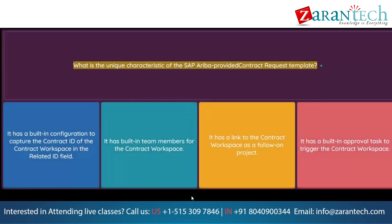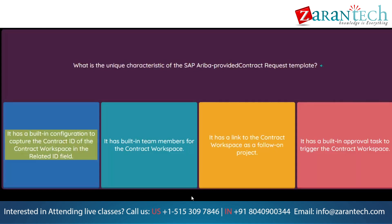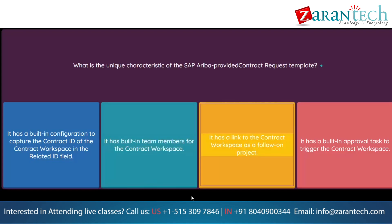Question: What is the unique characteristic of the SAP Ariba provided contract request template? Option 1: It has a built-in configuration to capture the contract ID of the contract workspace in the related ID field. Option 2: It has built-in team members for the contract workspace. Option 3: It has a link to the contract workspace as a follow-on project. Option 4: It has a built-in approval task to trigger the contract workspace.